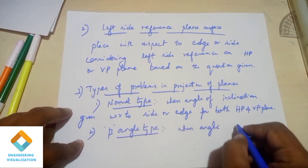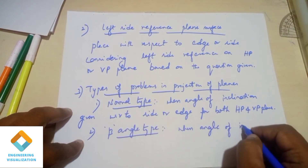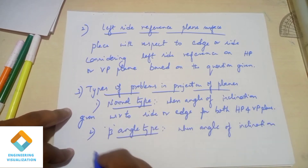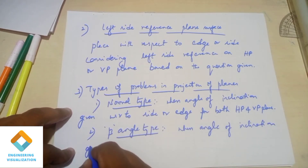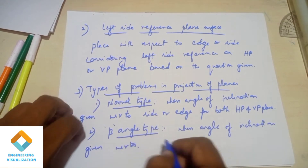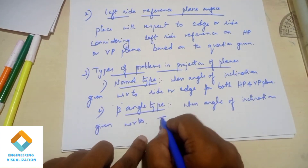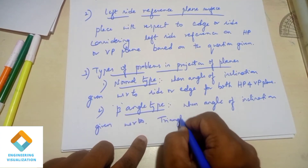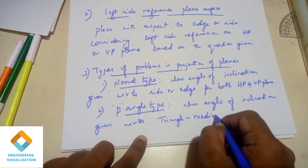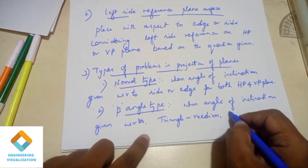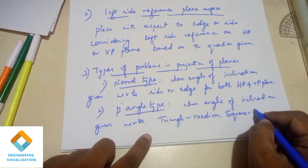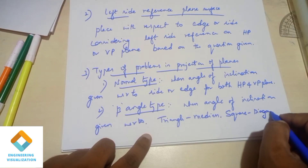The next type of problem is the beta angle type. In the beta angle type, particular words are mentioned: for triangle - median; for pentagon - perpendicular bisector; for square - diagonal; for hexagon - diagonal; for circle - diameter. These terms in the question are important for you to identify.